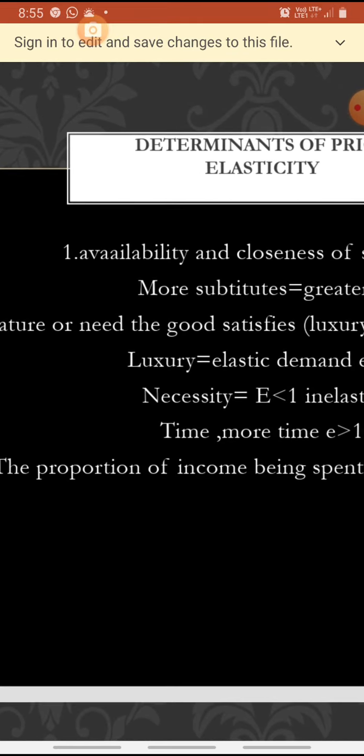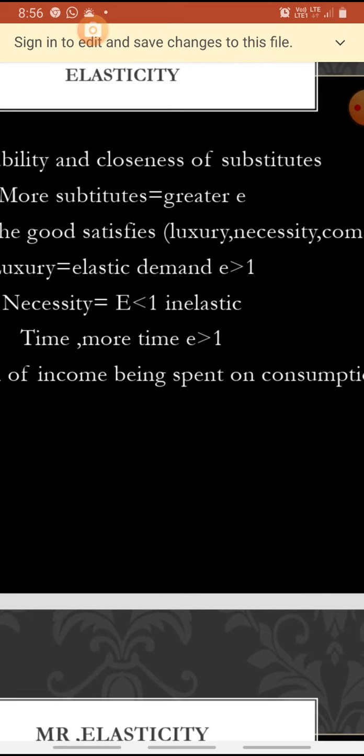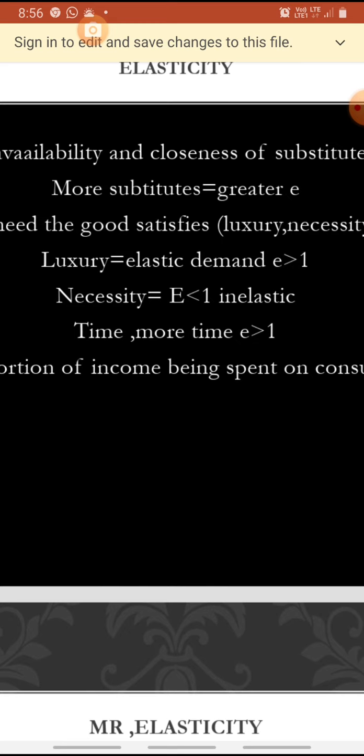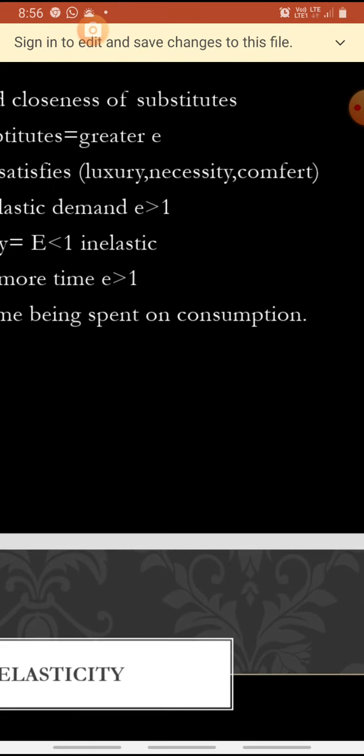Determinants of price elasticity: first, the availability and closeness of substitutes — more substitutes means greater elasticity. Second, the nature or need of the good. There are three types of commodities: luxury, necessity, and comforts. For luxury commodities, elasticity is greater than 1; for necessities, elasticity is less than 1, so it is inelastic. When more time is available, elasticity will be greater than 1. Also, the proportion of income spent on consumption affects elasticity.